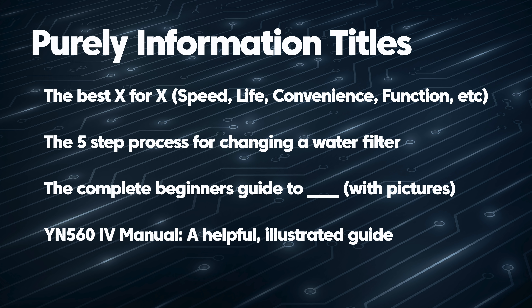Being descriptive about what the article is about and then being descriptive about how you're going to help them is a really valuable principle. It might be 'a helpful illustrated guide,' 'with charts and tables,' or 'with an infographic.' Another example: 'Best Water Filters for Cabins — Speed, Life, Convenience, and Performance.' That tells people these are the criteria I used to rank them. It adds credibility to your post and makes it more interesting to click, even though it's clearly just a highly information-based title.